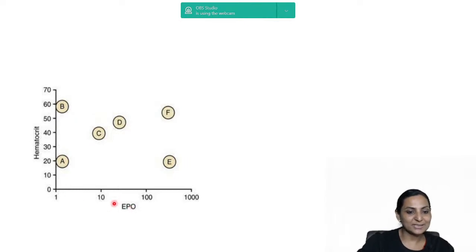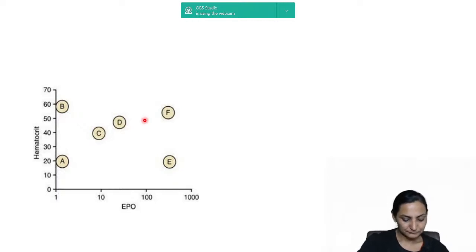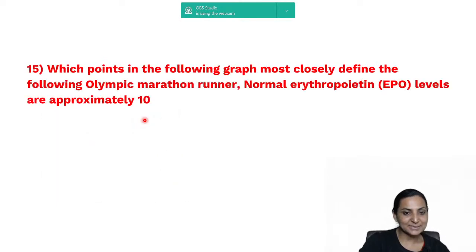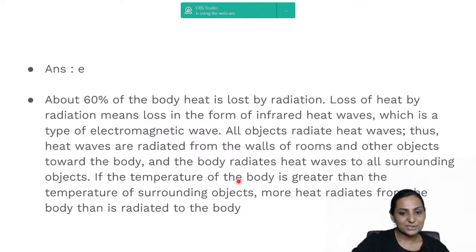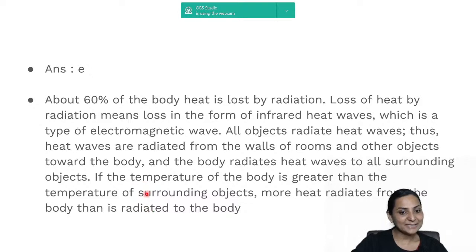A graph is given with erythropoietin level on the x-axis and hematocrit on the y-axis, with points A, B, C, D, E, and F. If the temperature of the body is less than the surroundings, the surrounding heat moves toward the body and the body will gain heat.